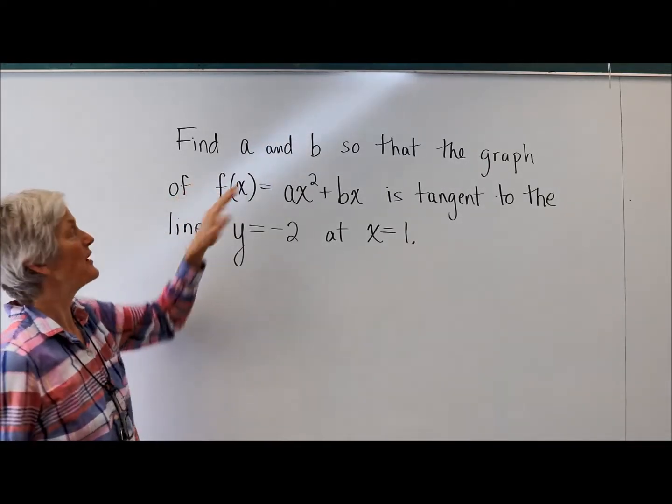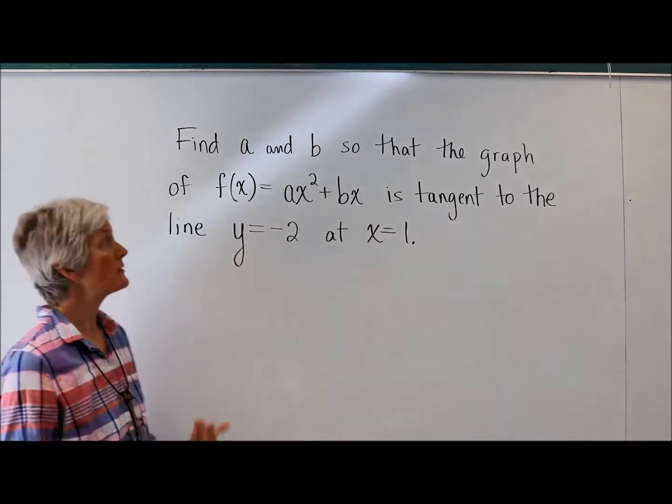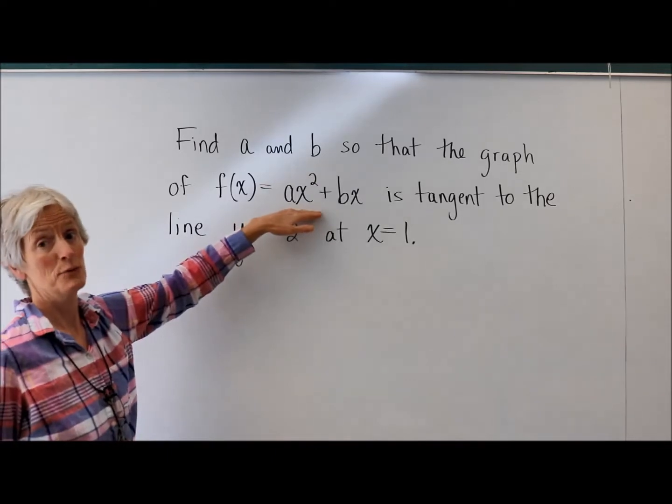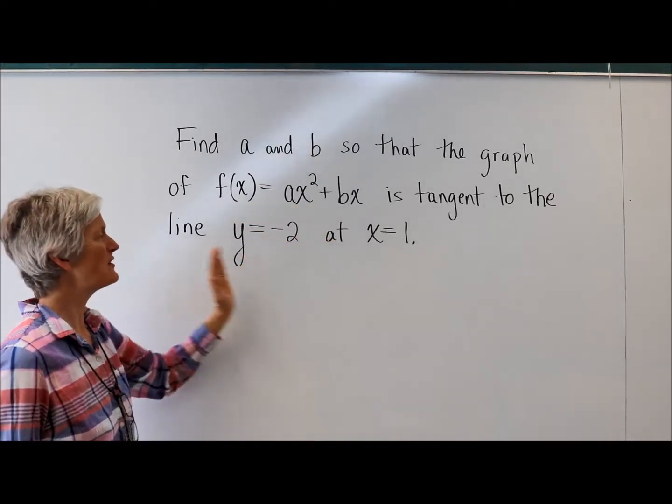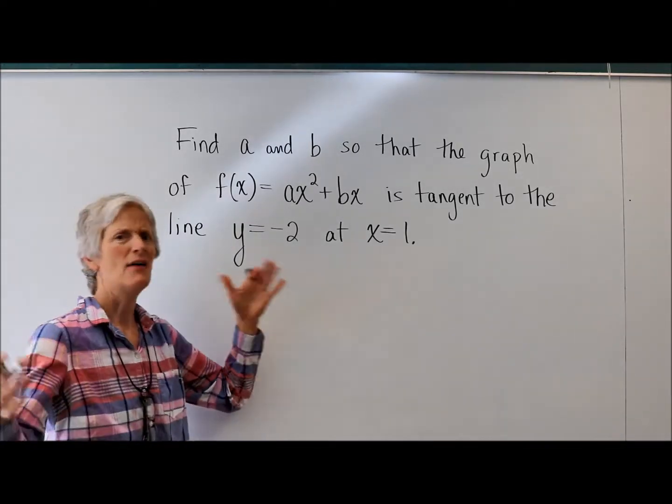All right. So we're looking for a and b. We're assuming a and b are constants, numbers, so that the graph of this function, a parabola, is tangent to the line y equals negative 2 at x equals 1.